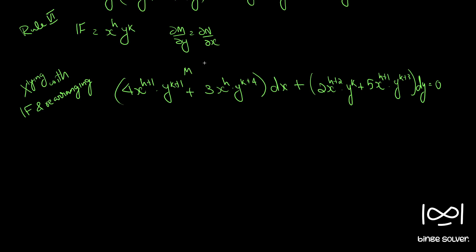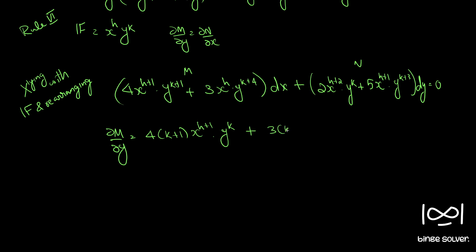Our M and N are identified. Now we find ∂M/∂y, which gives 4(k+1)·x^(h+1)·y^k plus 3(k+4)·x^h·y^(k+3).